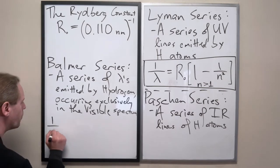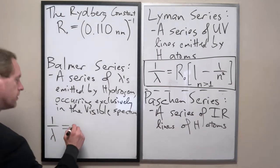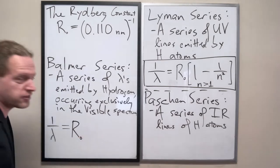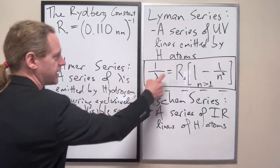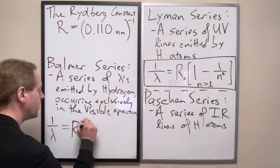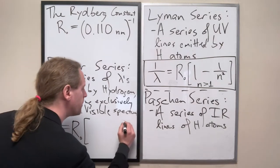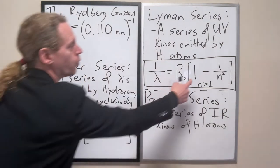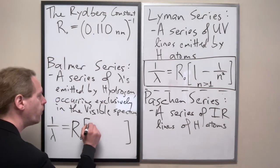Balmer series: 1 over lambda, same thing. It has that same physical constant which is the thing that connects all of these.